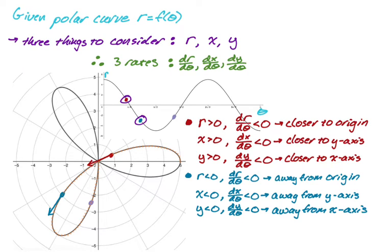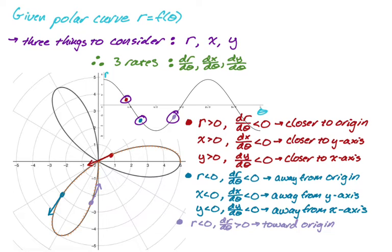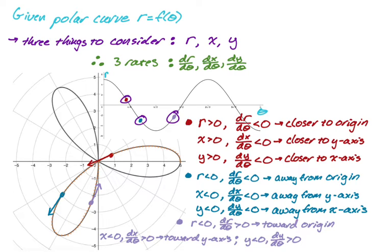For the purple point: the vector shows our direction of motion. The rectangular graph tells me R is negative and dr/dθ is positive, because the rectangular graph is increasing at that point. So if R is negative and dr/dθ is positive, I must be moving toward the origin. We're also in the third quadrant, so X is less than zero, but the vector points to the right so dX/dθ is positive — you're getting closer to the Y axis. Y is negative, but the arrow points up so dY/dθ is positive, meaning we are going toward the X axis.